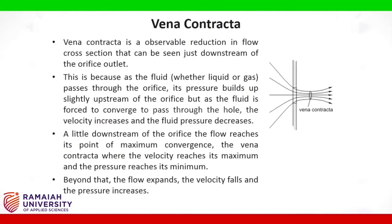Vena contracta is an observable reduction in flow cross section that can be seen just downstream of the orifice outlet. As the fluid, whether liquid or gas, passes through the orifice, its pressure builds up slightly upstream. But as the fluid is forced to converge to pass through the hole, the velocity increases and the fluid pressure decreases. A little downstream of the orifice, the flow reaches its point of maximum convergence — the vena contracta — where the velocity reaches its maximum and the pressure reaches its minimum.